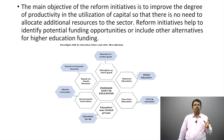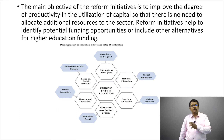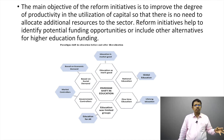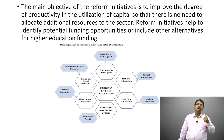There has been a paradigm shift in education. It was once prioritized as national education; now it has become global education. Once the slogan was 'one-time education'; now it is 'lifelong education'. Education was once limited to certain groups; now it is education for all. The government used to control education; now markets are the controllers. Education was based on social demand; now it is based on economic demand. Education was once a merit good; now education is a market good. This is the paradigm shift in education before and after liberalization.